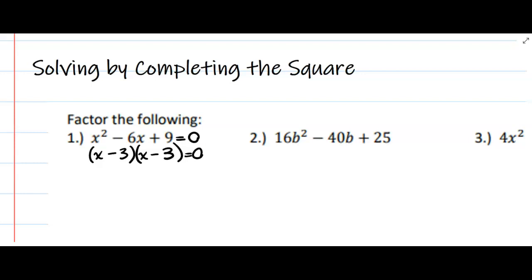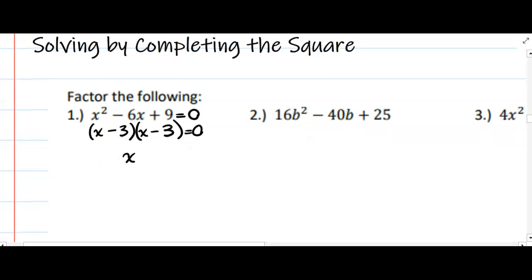And a faster way of writing this would be (x - 3) the quantity squared, instead of writing something close. You can just write it once and square it. Now to solve it, at this point I'm just taking the square root of both sides. I'm left with x - 3...